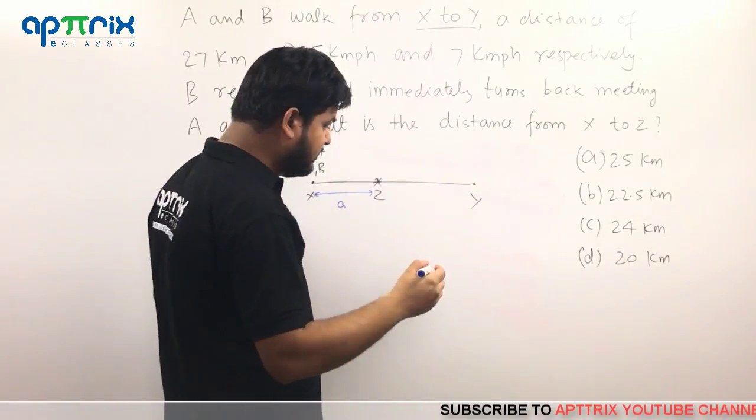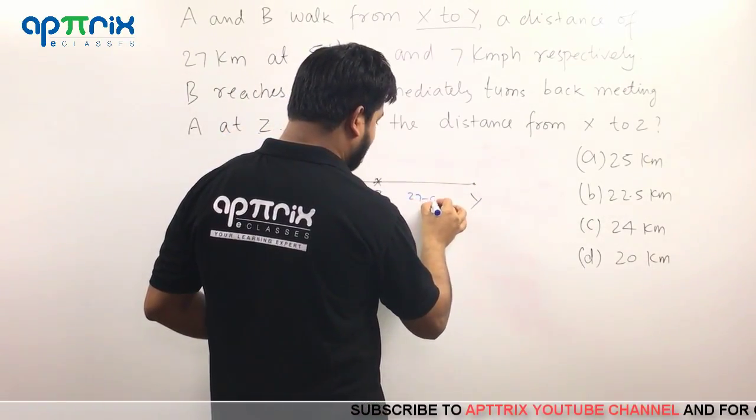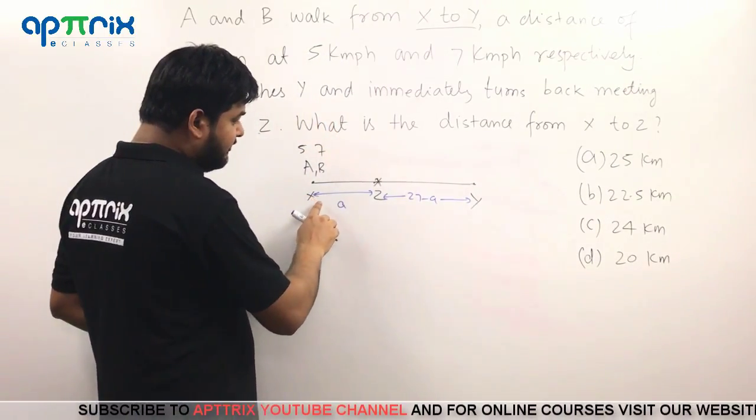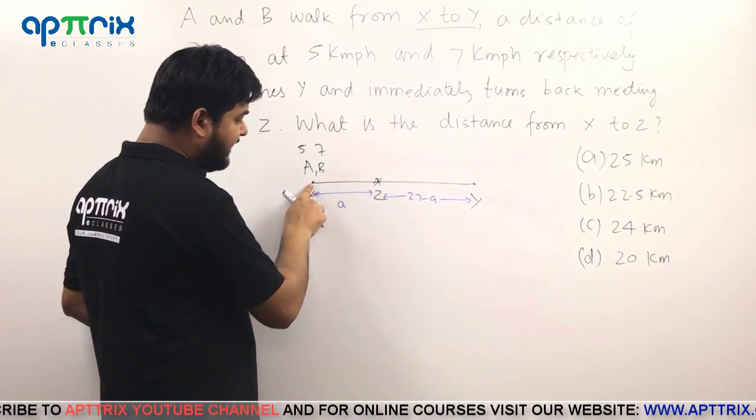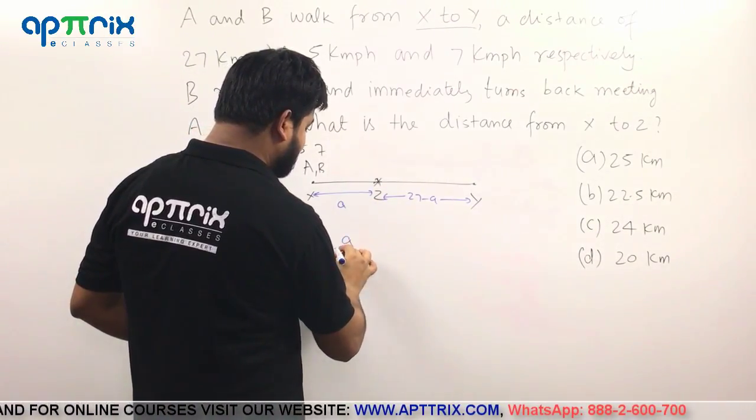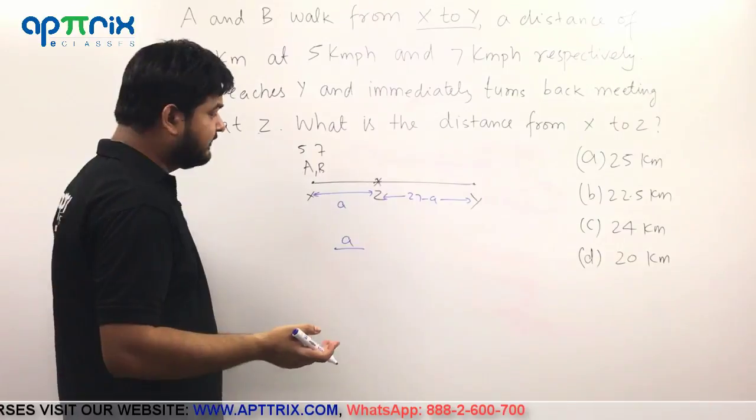And how do you do that? You say that if I assume this distance to be A and total distance is given to be 27, so this distance will be 27 minus A. Alright? Then how do you equate time? You will say that at point Z, A has traveled A distance. So the time taken will be distance upon speed.